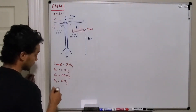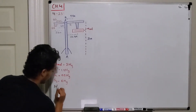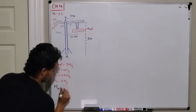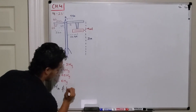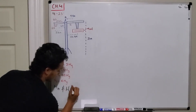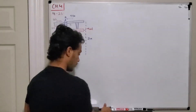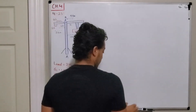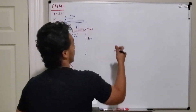What they're asking us is: what are the moments about point A and what are the moments about point B? That's the question, so in order to do this, let's draw a free body diagram.